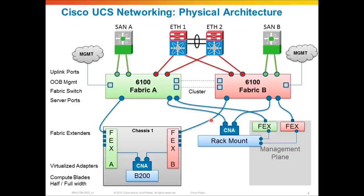Today, connecting rack mount servers directly to the Fabric Interconnect is the initial offering, and we will evolve this capability in the future. You can expect to be able to take these CNAs and connect them to 10GB Fabric Extenders, just like blades are connected to 10GB Fabric Extenders inside the chassis — looking a lot like that blade chassis architecture. That would also mean you would not need the 1GB Fabric Extenders for back-end management, as all management could be done in-band through 10GB Fabric Extenders.